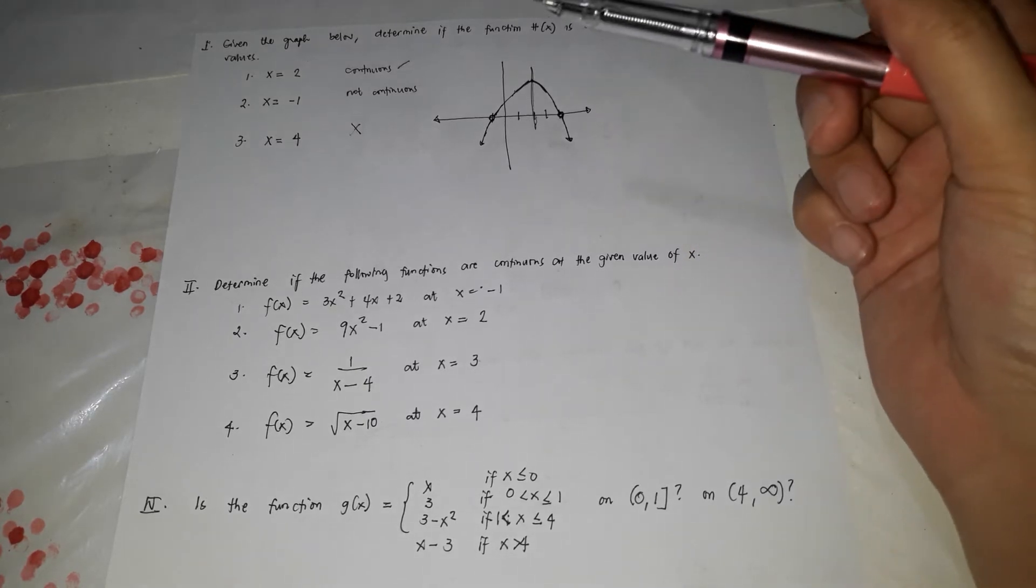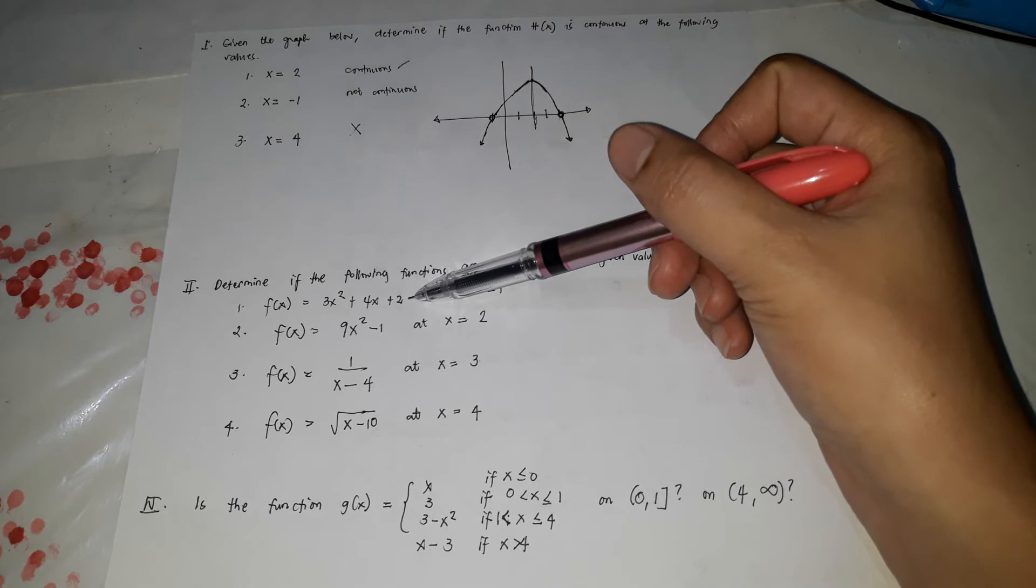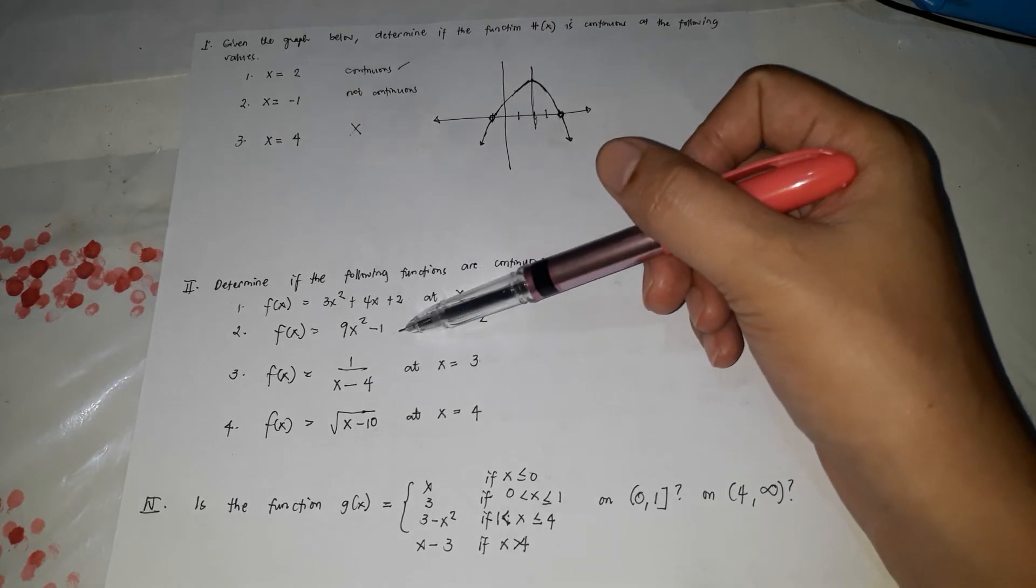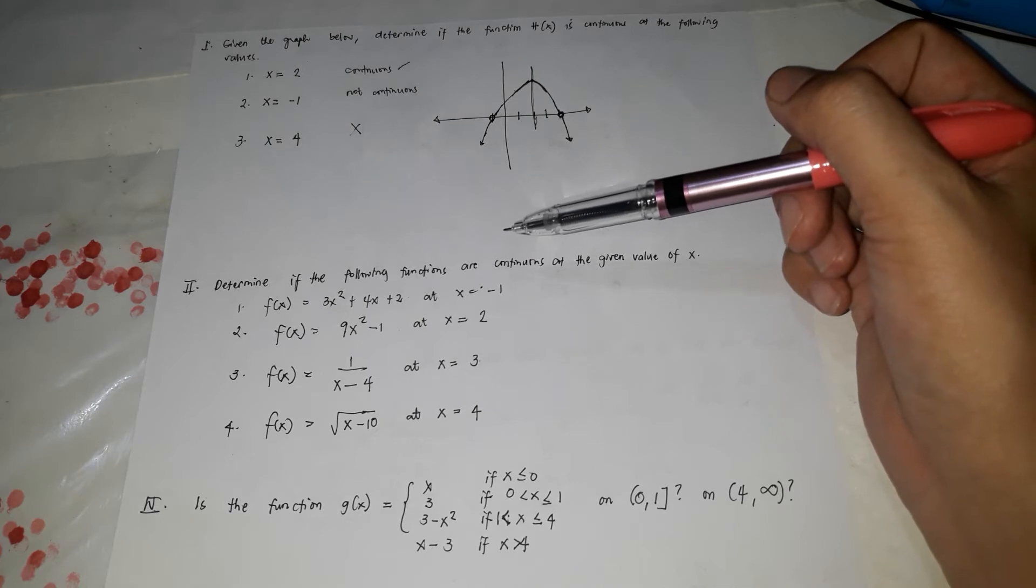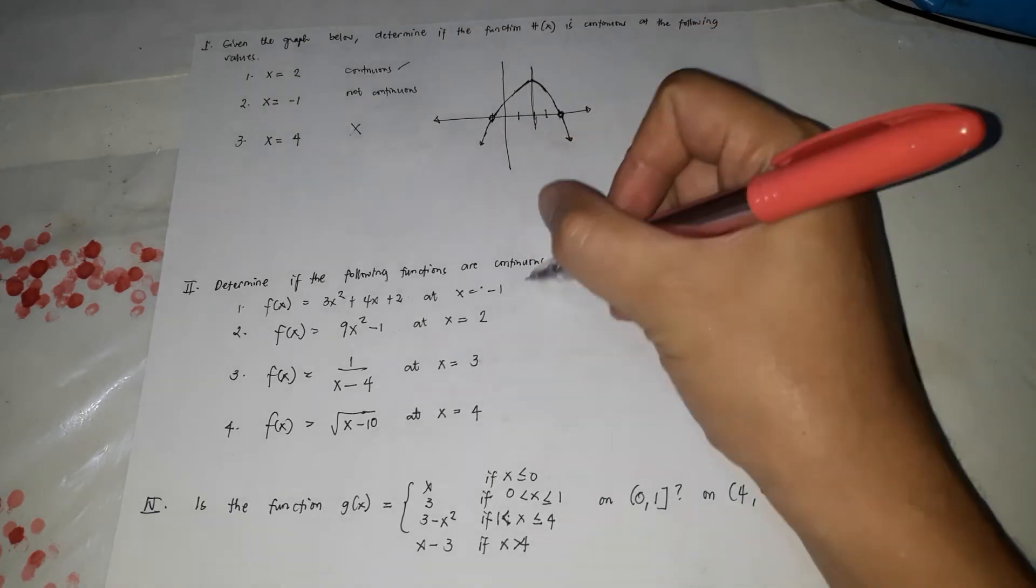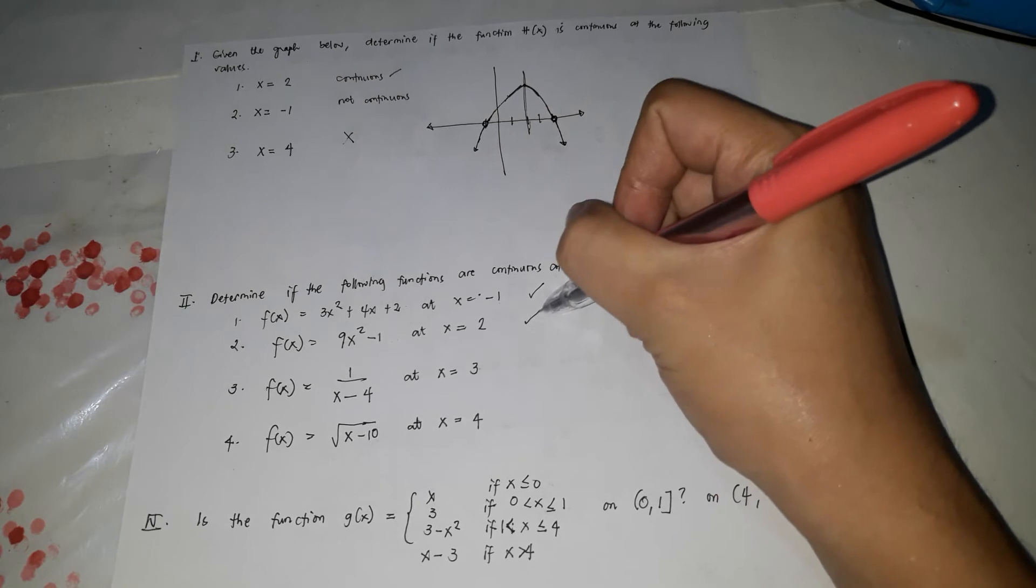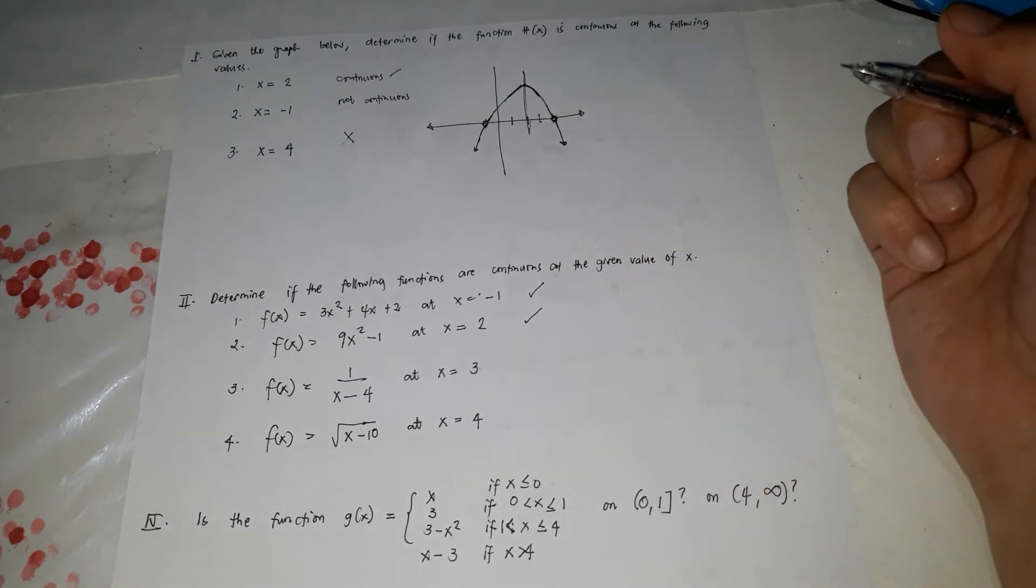Kapag this one, polynomial, di ba? If they are polynomials, it's all continuous and all real numbers. So, ito kasi real numbers siya, so continuous siya. It's just continuous also if it is polynomial.